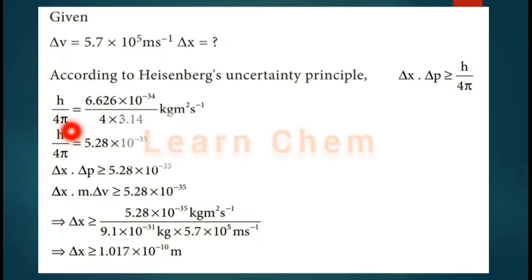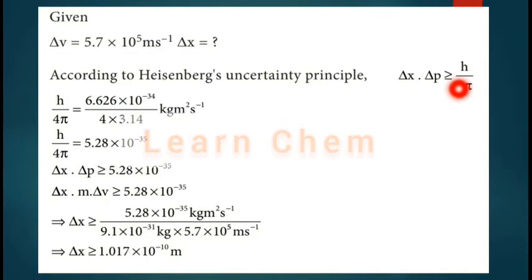If you substitute the values of h and π, you get h/4π = 5.28×10⁻³⁵. We can simply apply this value in the formula: Δx × Δp ≥ h/4π. Substituting, Δx × Δp ≥ 5.28×10⁻³⁵.